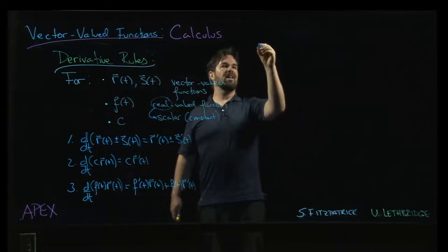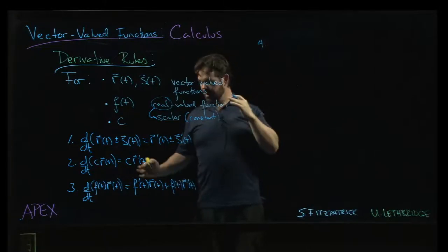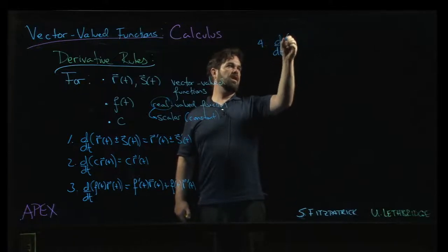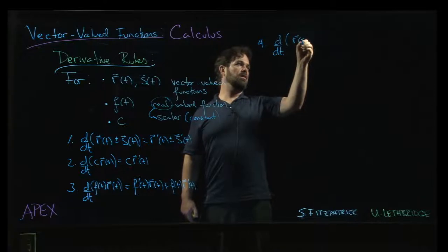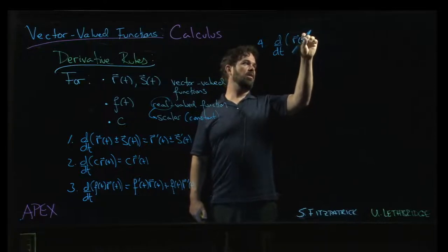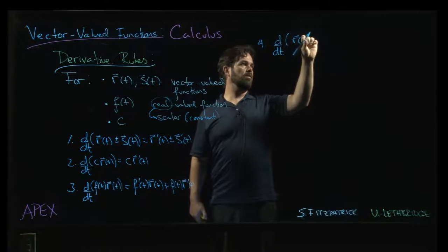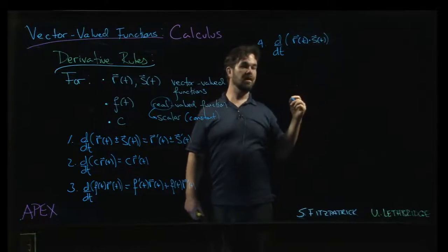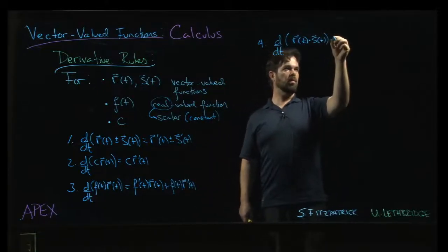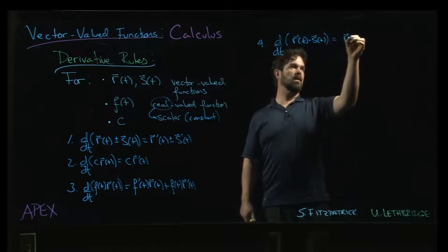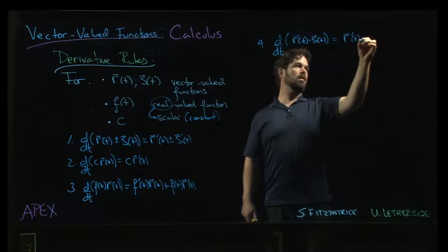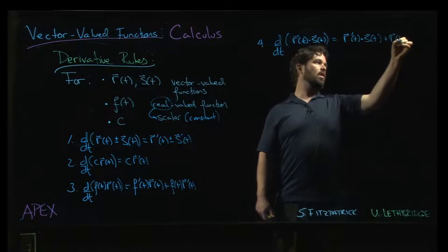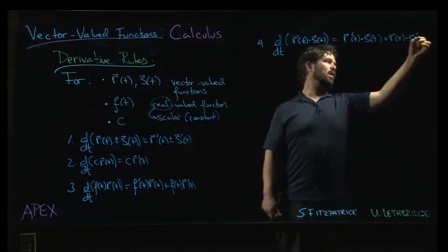But we're not done. That's not the only product that we can talk about in the context of vector-valued functions. And we can also take the derivative of a dot product, oops, not r of s, r of t. So r of t dotted with s of t. And the product rule works there, too. Okay, you're going to get r prime of t dotted with s of t plus r of t dotted with s prime.